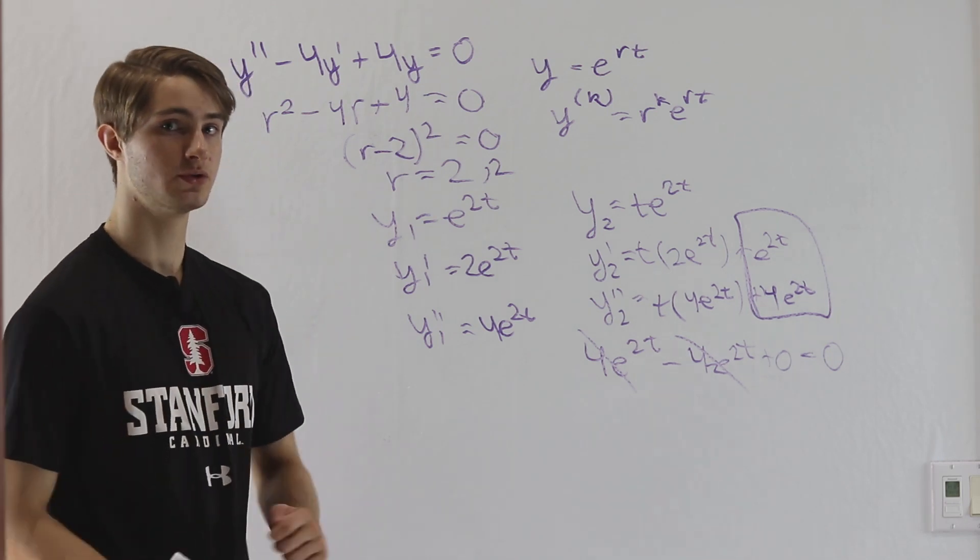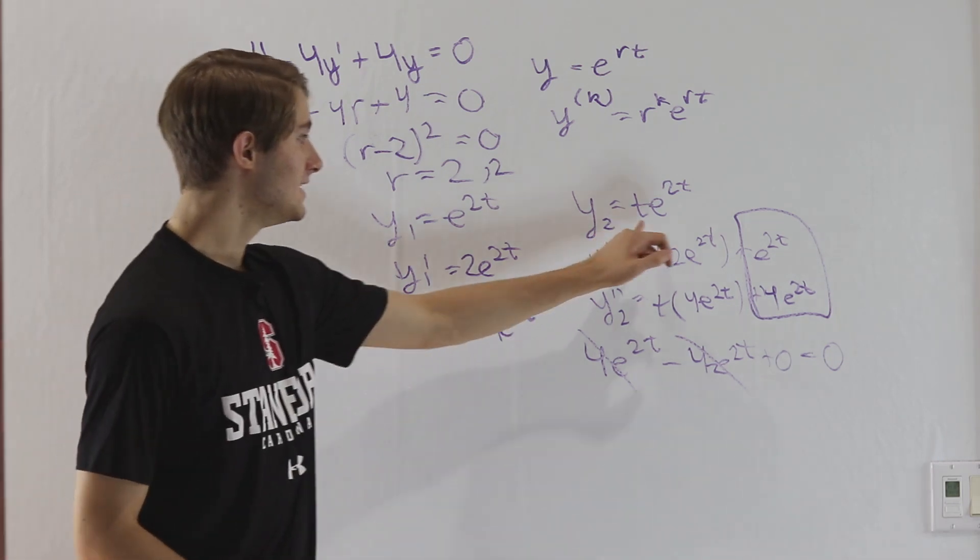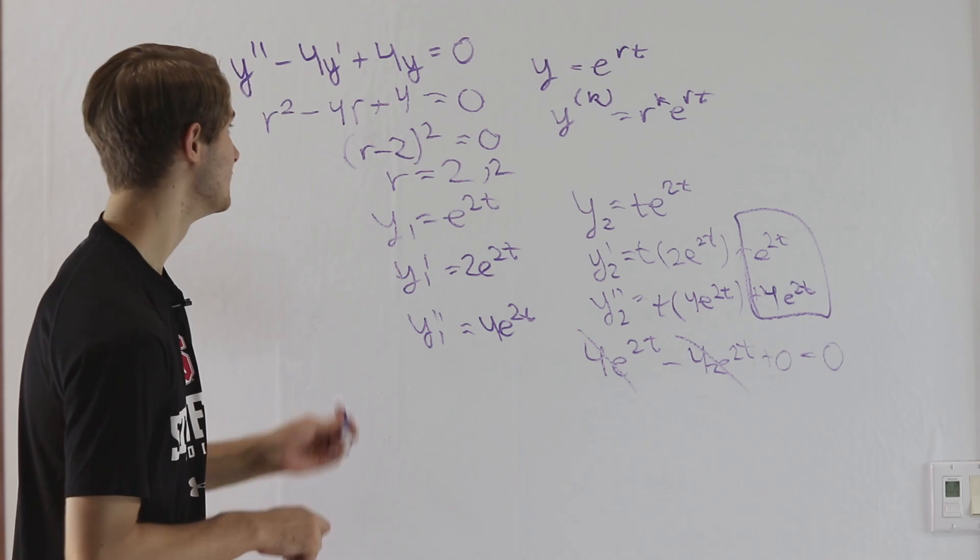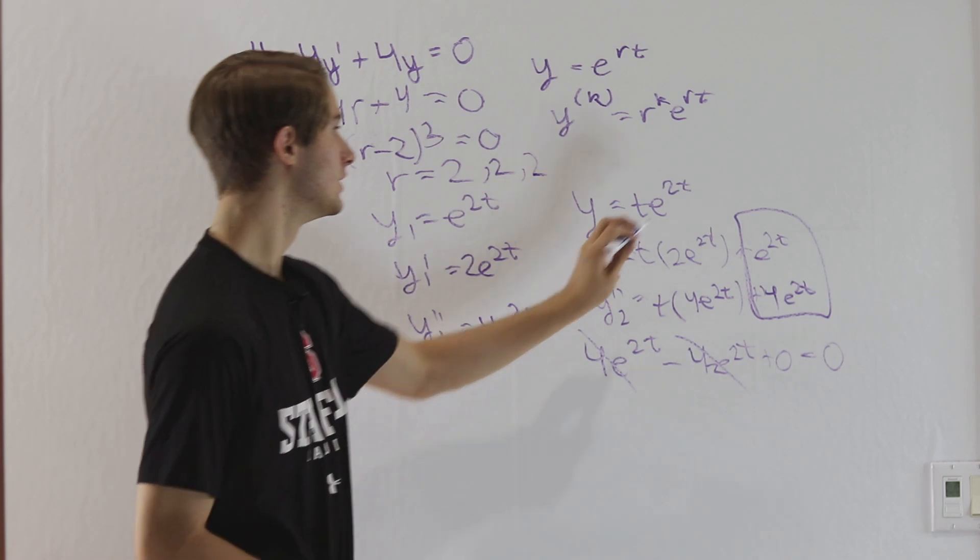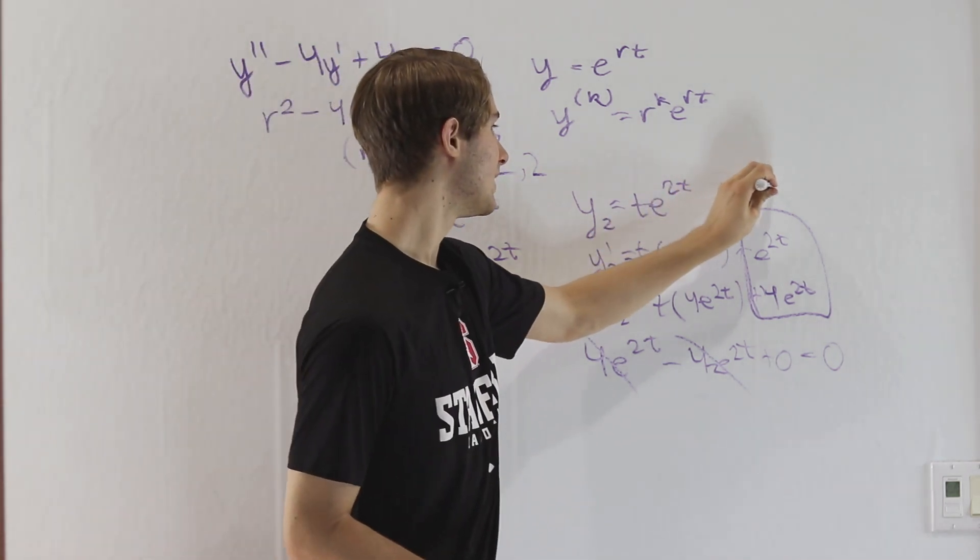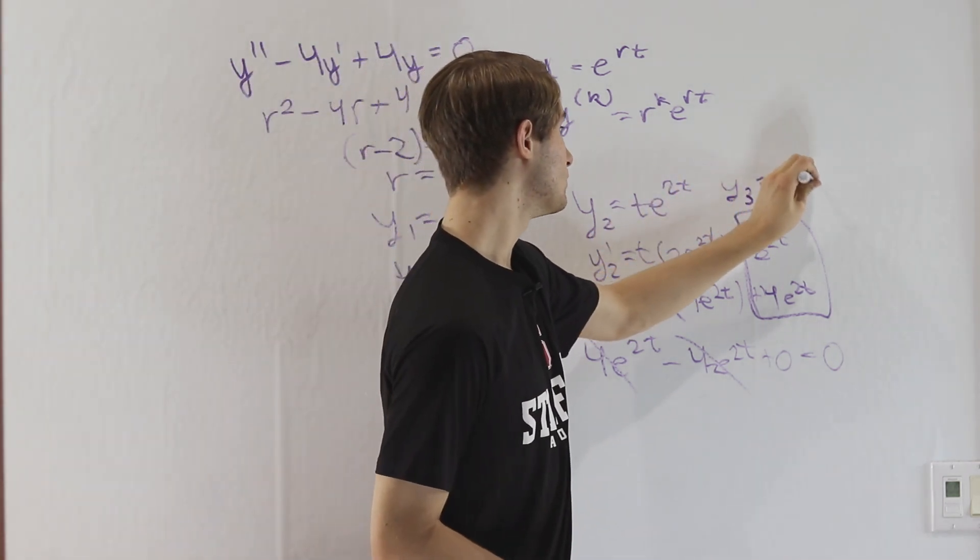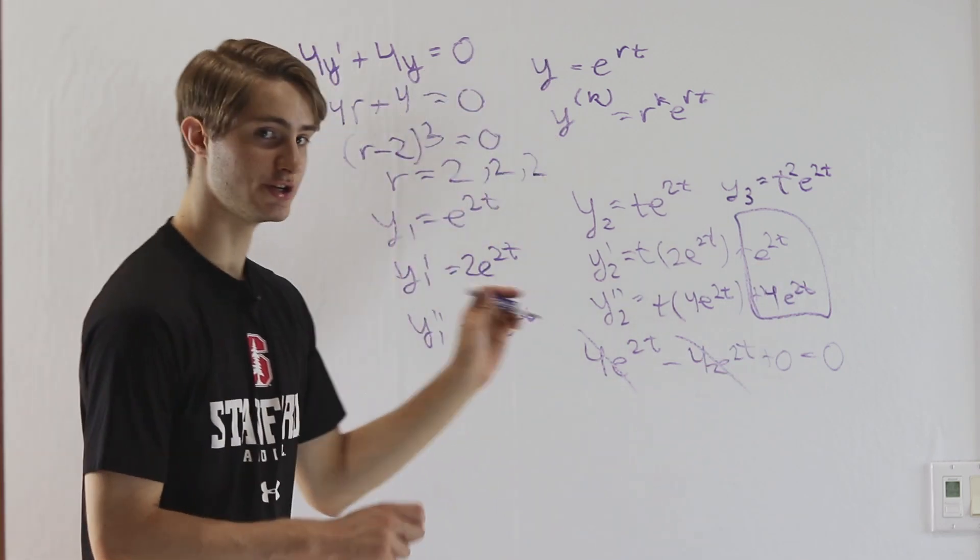Now, if you have a triple root or a quadruple root, you're going to keep increasing this power of t. So say we had r minus 2 cubed over here and then we had a triple root. Our third solution will be y3 equals t squared e to the 2t, just like that.